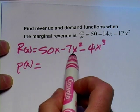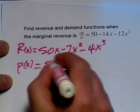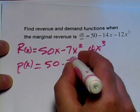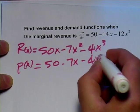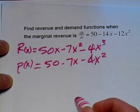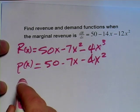But again, I'm just going to take each term here and divide it by x. So 50x over x is just 50, negative 7x² over x is negative 7x, and negative 4x³ over x is negative 4x². So there's our revenue function. There's our demand function.